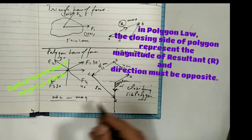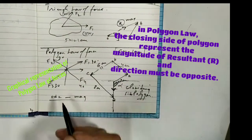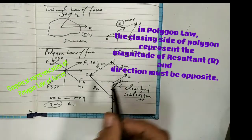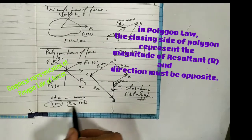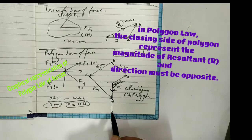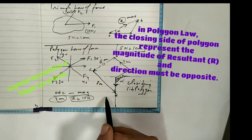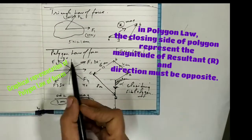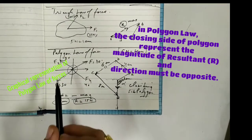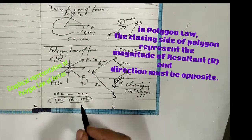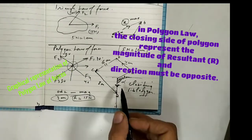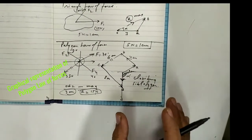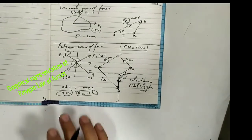By measuring OD — let's say it is 3 cm — and using our scale of 5 newton per centimeter, the resultant magnitude is 15 newton. This single force of 15 newton in that specific direction will produce the same effect as all four original forces combined. This is the resultant of all forces using the polygon law of forces.